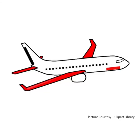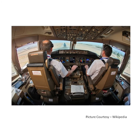This is an airplane. It comes in many different shapes and sizes. Airplanes have wings, and with the help of these wings the plane flies in the sky. A person who flies a plane is called a pilot.